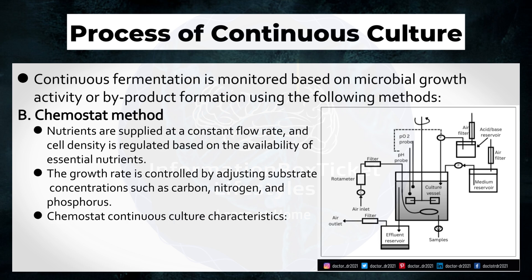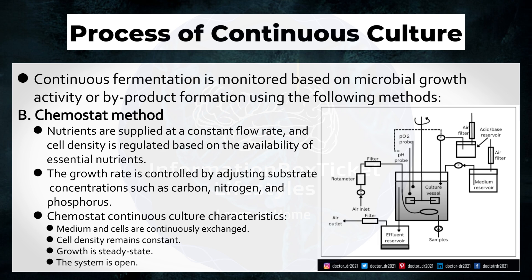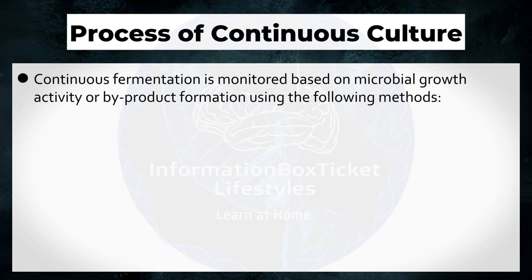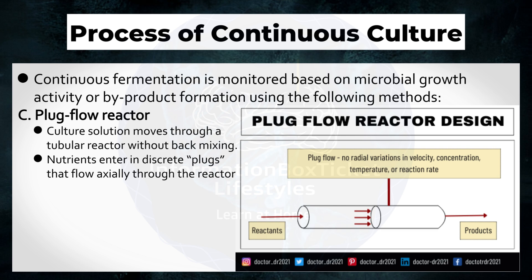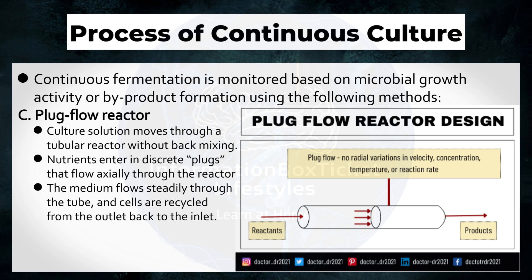Chemostat Continuous Culture Characteristics: Medium and cells are continuously exchanged; cell density remains constant; growth is steady-state; and the system is open. Plug Flow Reactor: Culture solution moves through a tubular reactor without back-mixing. Nutrients enter in discrete plugs that flow axially through the reactor. The medium flows steadily through the tube, and cells are recycled from the outlet back to the inlet.